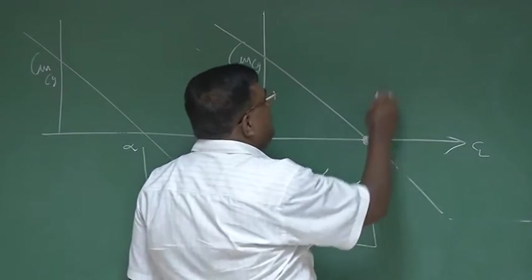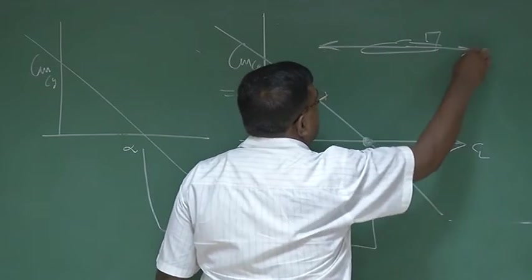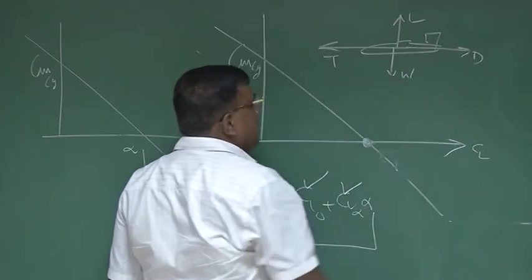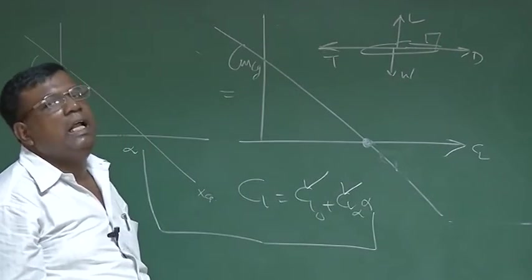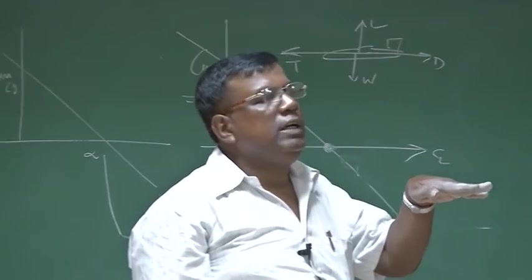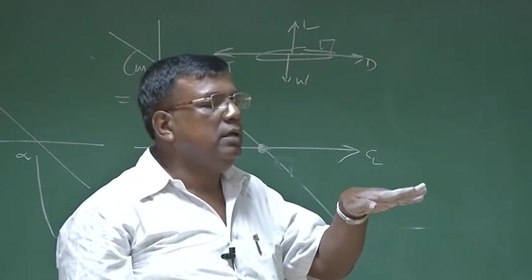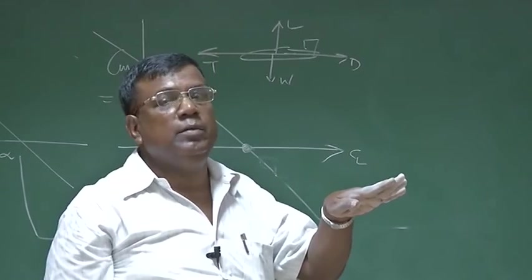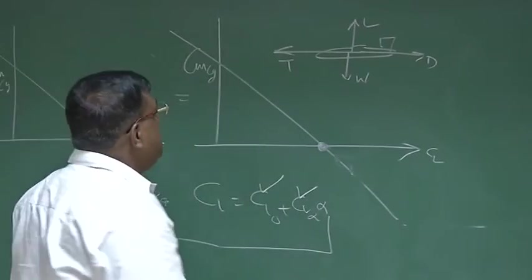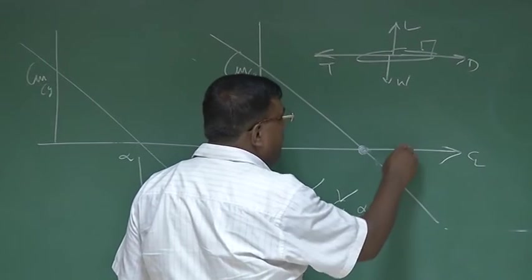Let us see — an airplane was moving like this at cruise. Our equilibrium is cruise. Because of some disturbance, CL has increased. What is the meaning of that? Because of some disturbance, CL has increased. It was going at a particular CL, let us say 0.2, corresponding to say 3 degrees. Because of some upward gust, the 3 degrees has become 5 degrees, so the CL has changed — the perturbation is on the CL. Let us say CL has changed and it comes to this point.